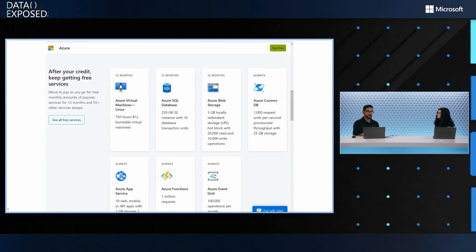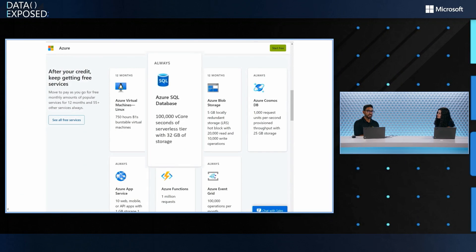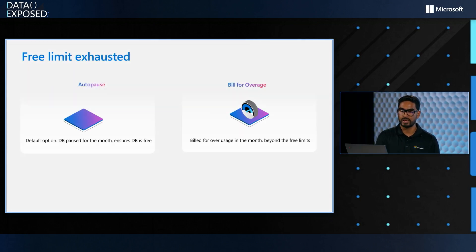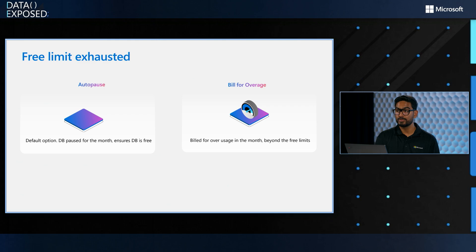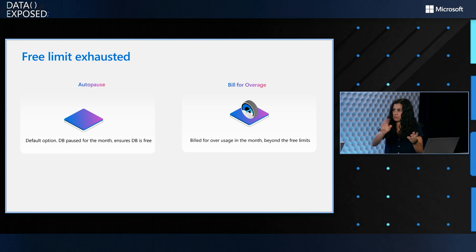The offer has been in public preview for a few months and customers have seen very cool applications with it. There's also awesome flexibility — if your free offer usage is getting close to the limit or you want to upgrade, you just flip a toggle to enable bill-over-usage, which lets you scale all the way up to 80 vCores and four terabytes of storage. So if your app really picks up, no problem — just switch it over and scale up.